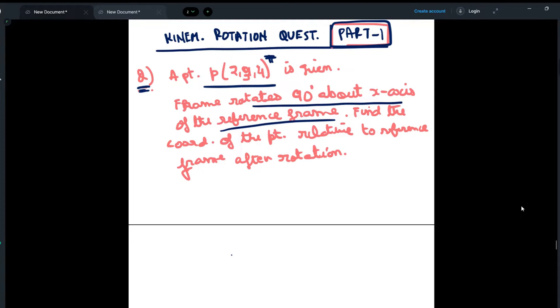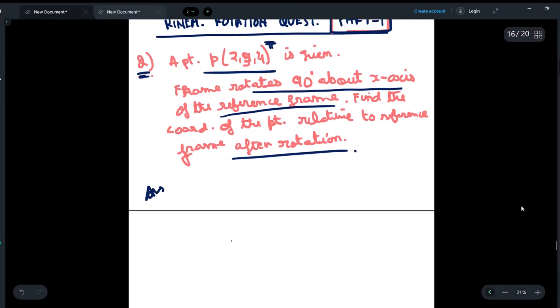First of all, we will write the formula: P_new is given as R, where we will be rotating the x-axis about a point in the reference frame by an angle theta, which is given as 90 degrees according to the question, and we will multiply this part by P_old.